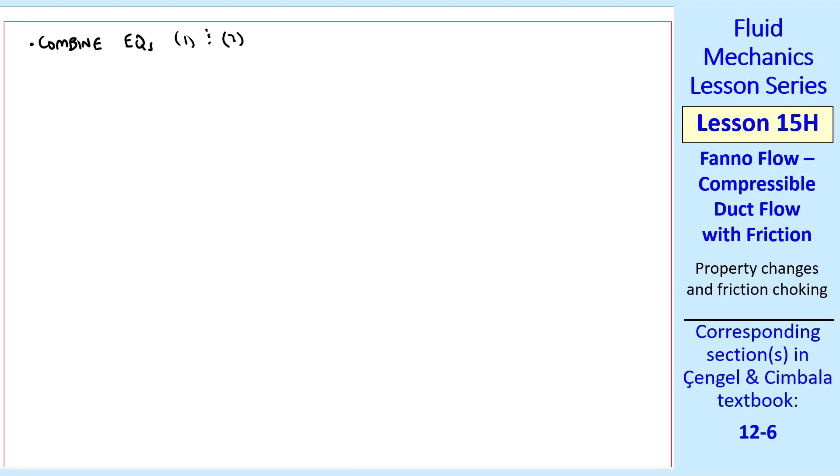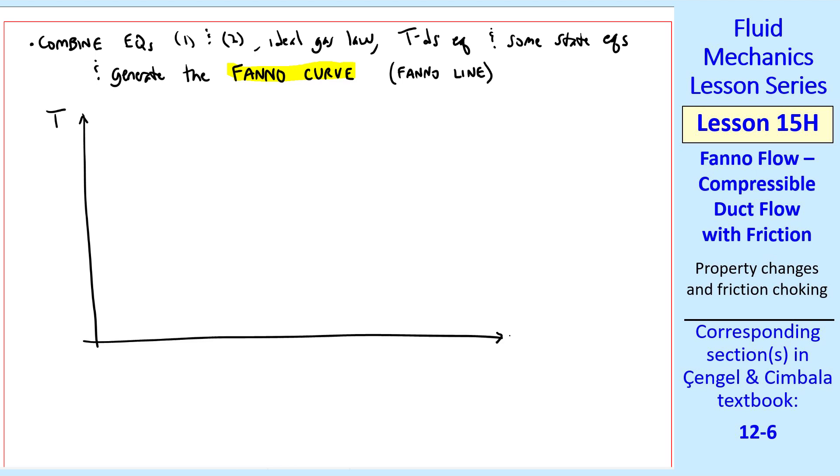Let's combine the mass and energy equations 1 and 2, the ideal gas law, Tds equation, and some state equations for compressible flow that we learned previously, and generate the Fanno curve, or Fanno line. This is similar to what we did with Rayleigh flow. Namely, we plot on a T-S diagram. The Fanno curve looks something like this, where like the Rayleigh curve, we have a subsonic branch and a supersonic branch. We also see a maximum specific entropy point, which we'll also call S star, where these two branches intersect.